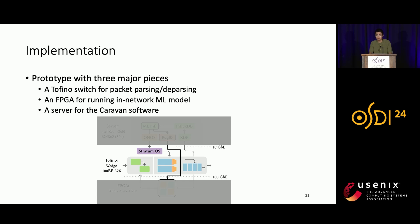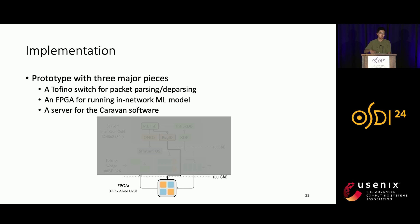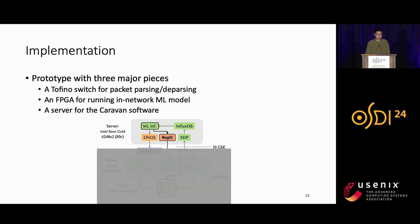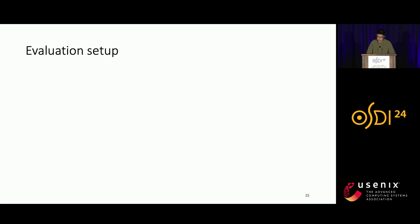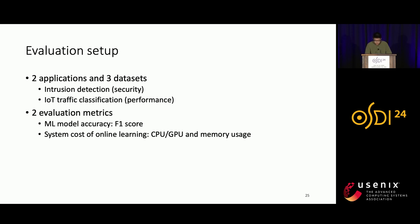We now introduce how we implement and evaluate Caravan in real networking scenarios. For implementation, we build a prototype with three major pieces: a Tofino switch for packet parsing and deparsing to obtain features associated with packets; an FPGA for running the in-network machine learning model at up to 100 gigabits per second; and a server for the Caravan software that handles data labeling and model retraining online. For evaluation, we use two major classes of applications: intrusion detection for security, and IoT traffic classification for performance enhancement. We use F1 score to measure model accuracy, and CPU, GPU, and memory usage to measure system cost.